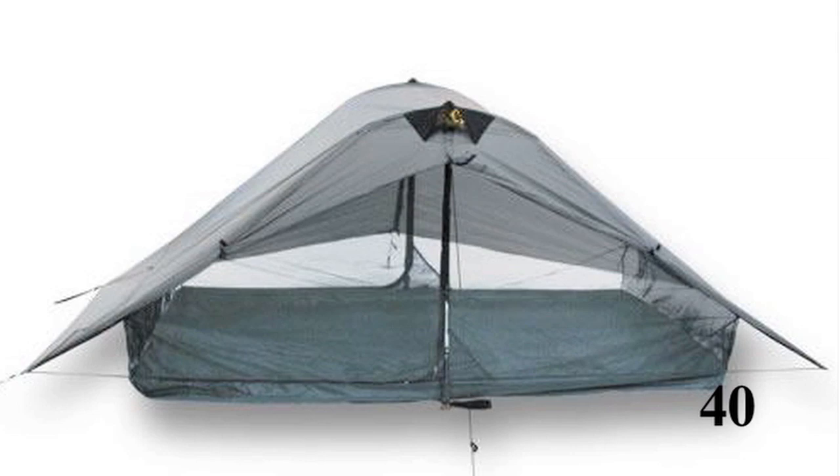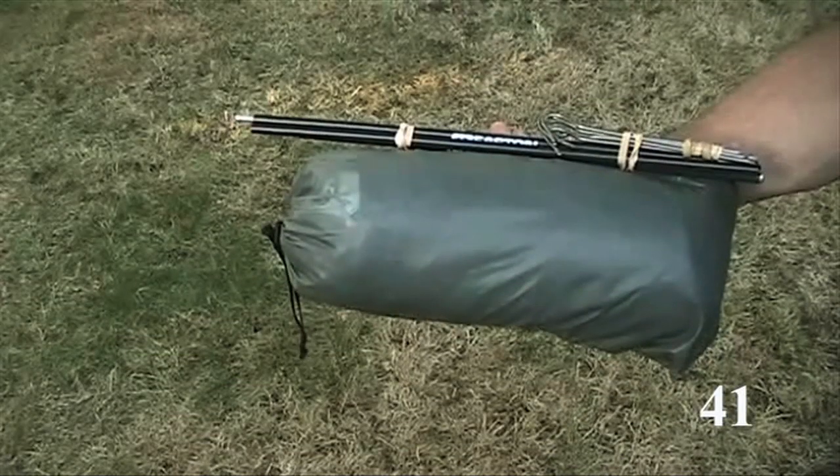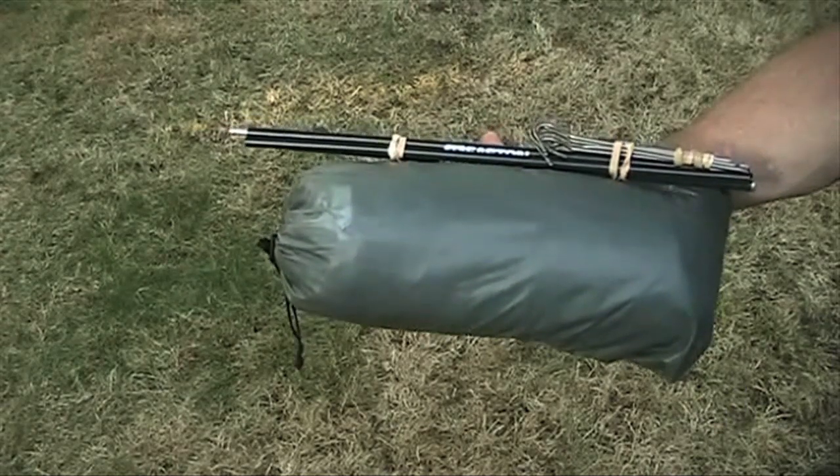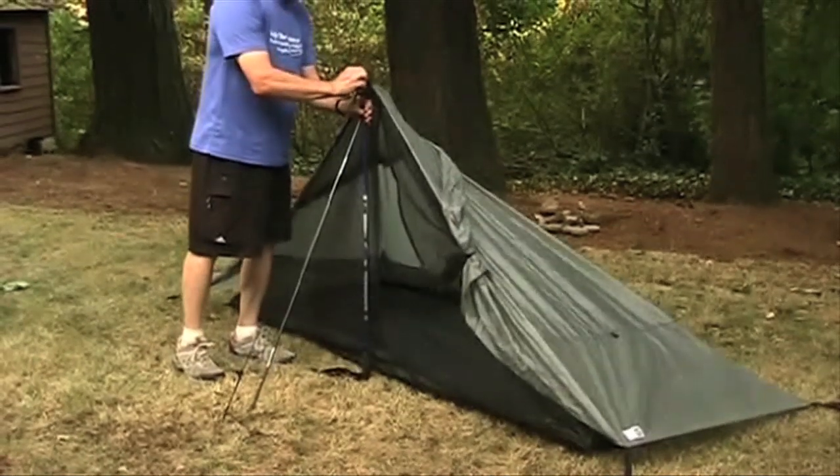Buy a light tent that's less than three pounds for two or less than two pounds for solo. If you often go with a companion, get a one-person tent for those times you go alone. If you use hiking poles, you can save the weight of tent poles on some tents.